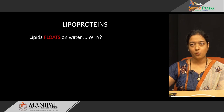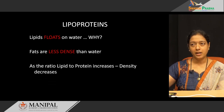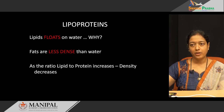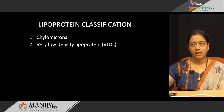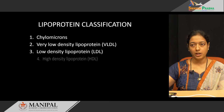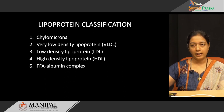Lipids float on water because they are less dense than water. Lipoprotein contains both lipids and protein. When the lipid content increases, the density decreases — that is why when the ratio of lipid to protein increases, density decreases. There are five lipoproteins: chylomicrons, very low density lipoprotein (VLDL), low density lipoprotein (LDL), high density lipoprotein (HDL), and free fatty acid albumin complex. Today we are going to discuss low density lipoprotein.